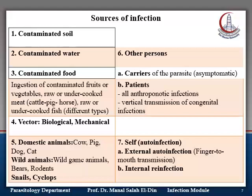And then from a patient to themselves through two mechanisms: either anthroponotic infection — anthroponotic being the opposite of zoonotic, meaning man-to-man transmission — that is, acquiring the infection from another human being. There is also vertical transmission of congenital infections from mother to her fetus in utero. And lastly, self-infection or auto-infection, whether external or internal. These are the possible sources of infection.